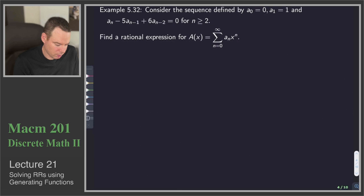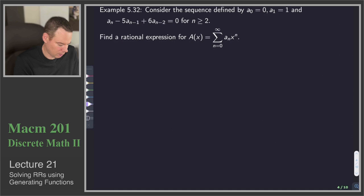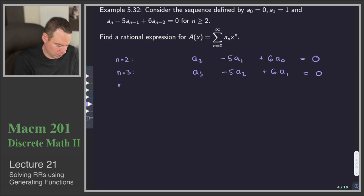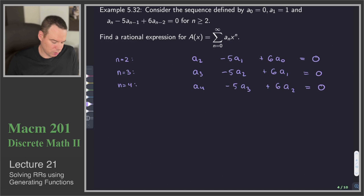In this example, we've got a second-order recurrence relation with a couple of initial conditions. Our goal is to find a rational expression for the generating function. We'll proceed as before, writing down an equation for the smallest allowed value — n equals 2 — giving: a_2 - 5a_1 + 6a_0 = 0. Then for n equals 3, and n equals 4, and so on — infinitely many equations.